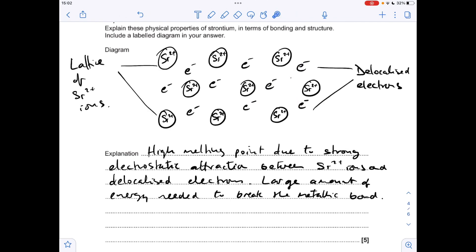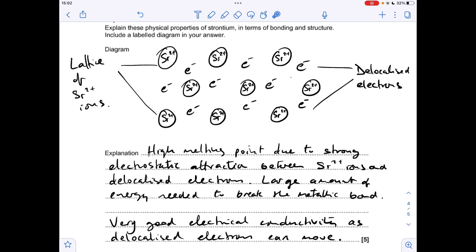So why has it got a high melting point? Well, there's obviously a strong attraction between the SR2 plus ion and the delocalised electron. So a large amount of energy is needed to break that metallic bond. And why has it got very good electrical conductivity? That's because the delocalised electrons can move.